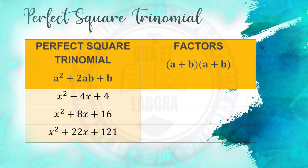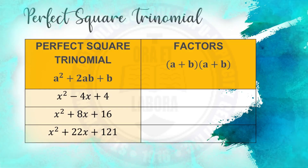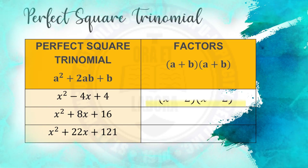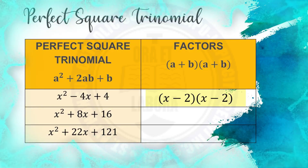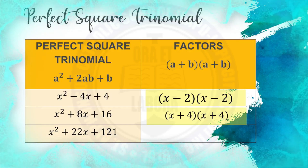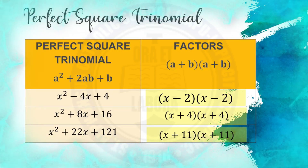For example, x squared minus 4x plus 4 — the factors are quantity x minus 2 times quantity x minus 2. Next, x squared plus 8x plus 16 — the factors are quantity x plus 4 times quantity x plus 4. And x squared plus 22x plus 121 — the factors are quantity x plus 11 times quantity x plus 11.